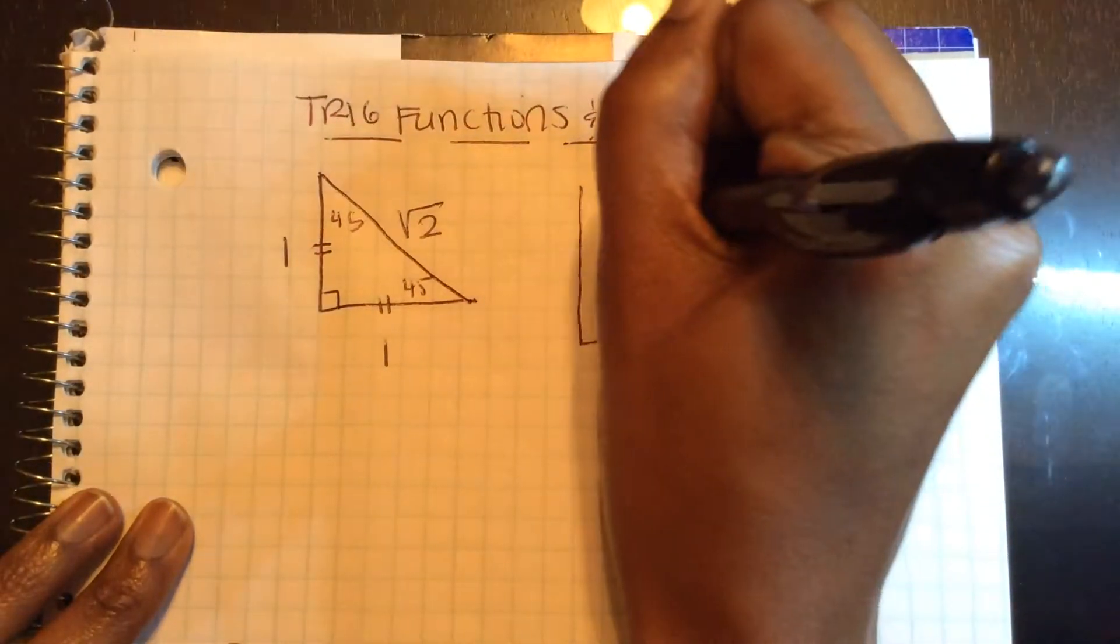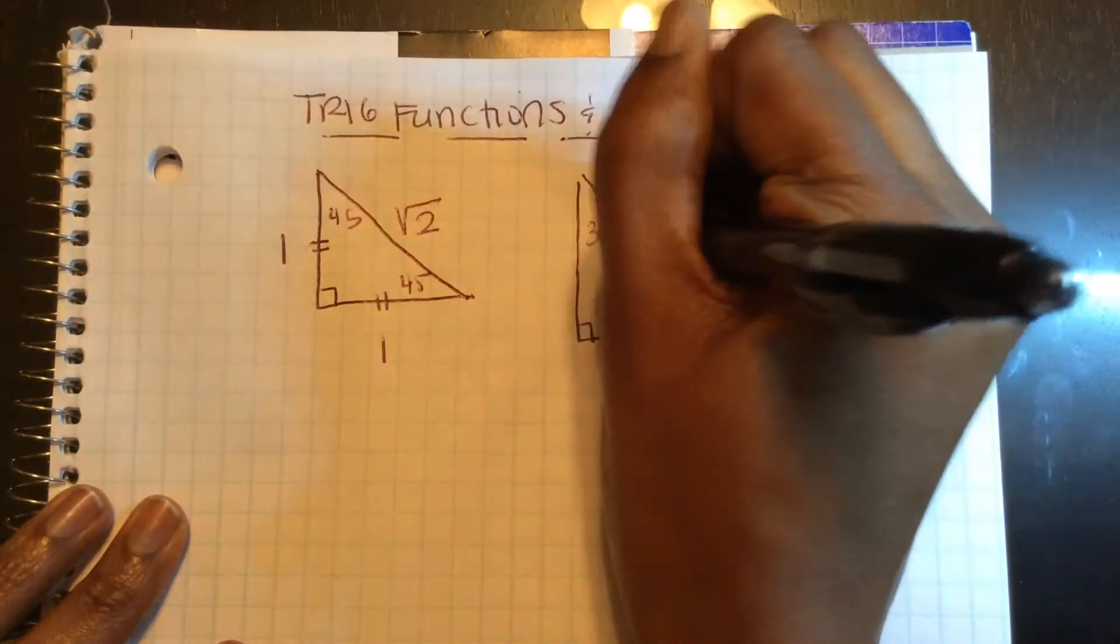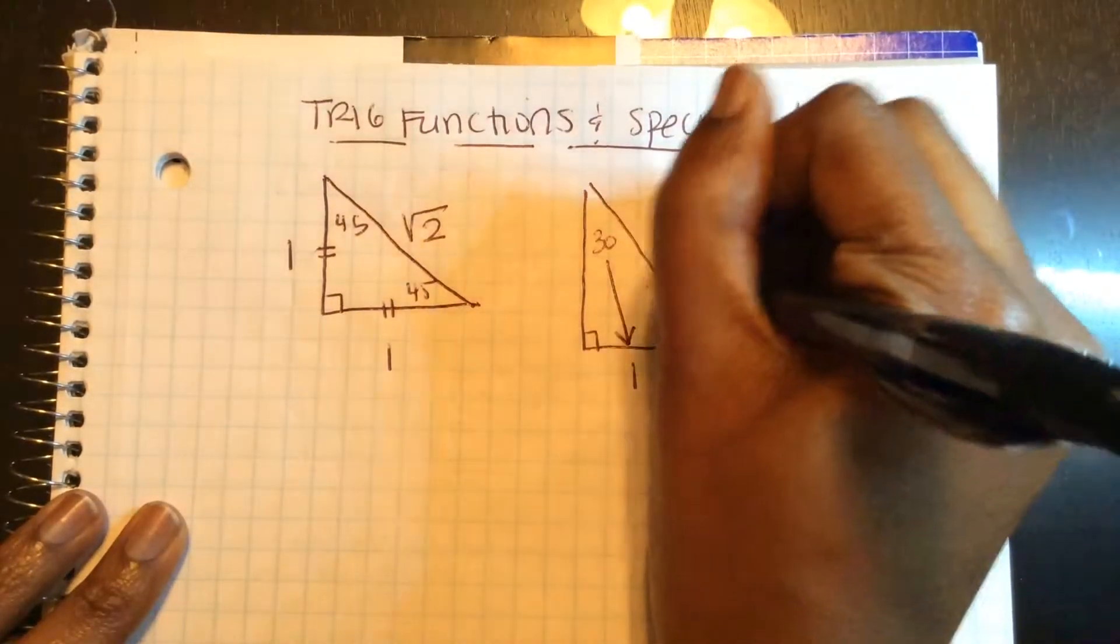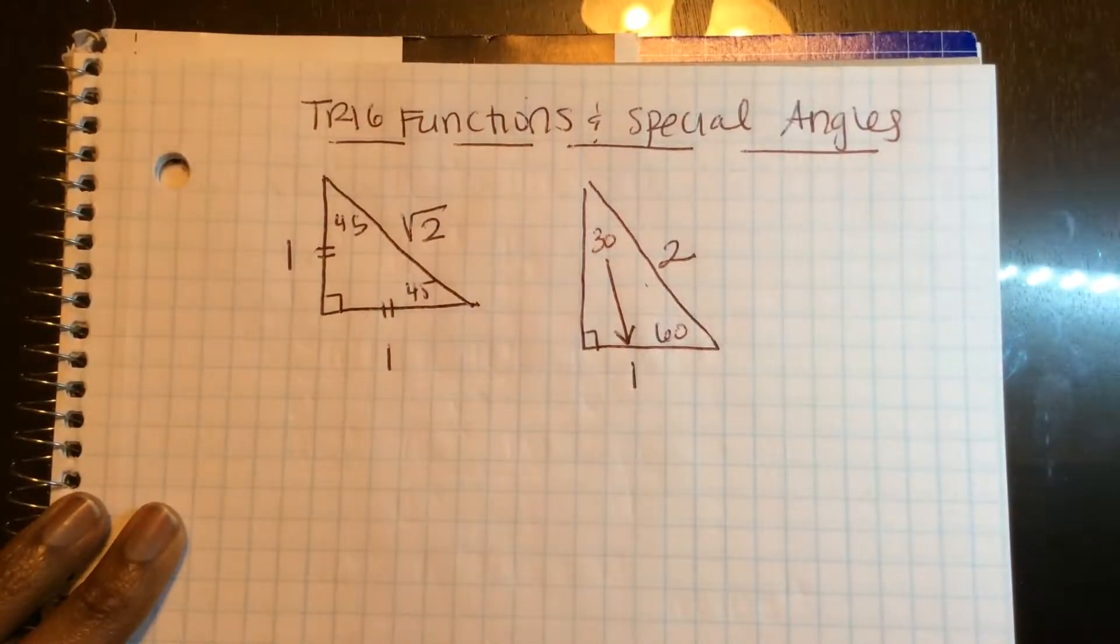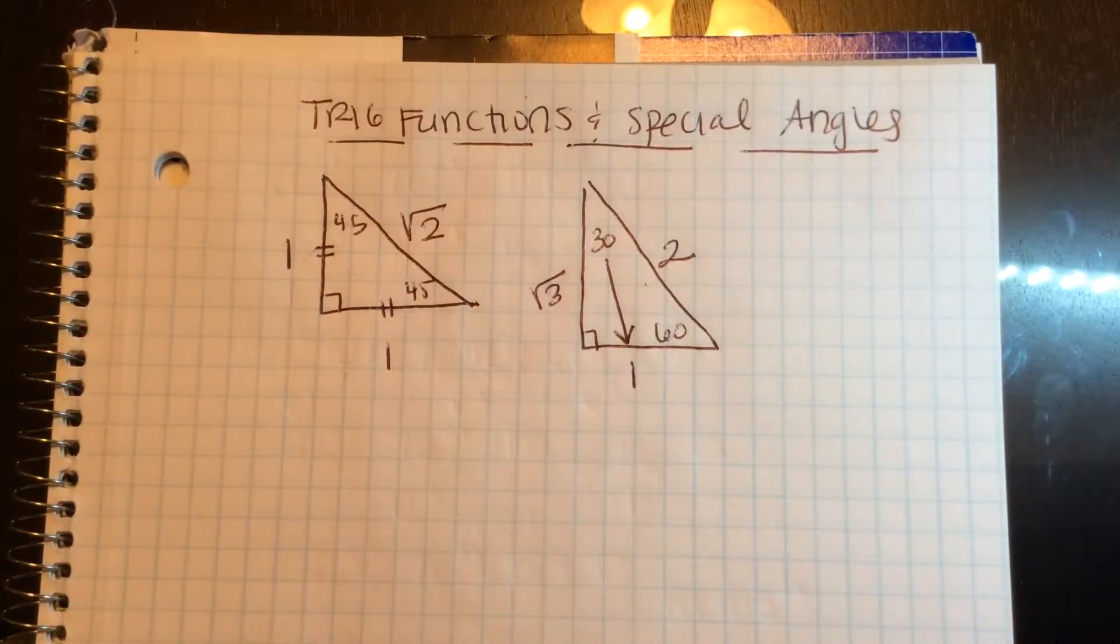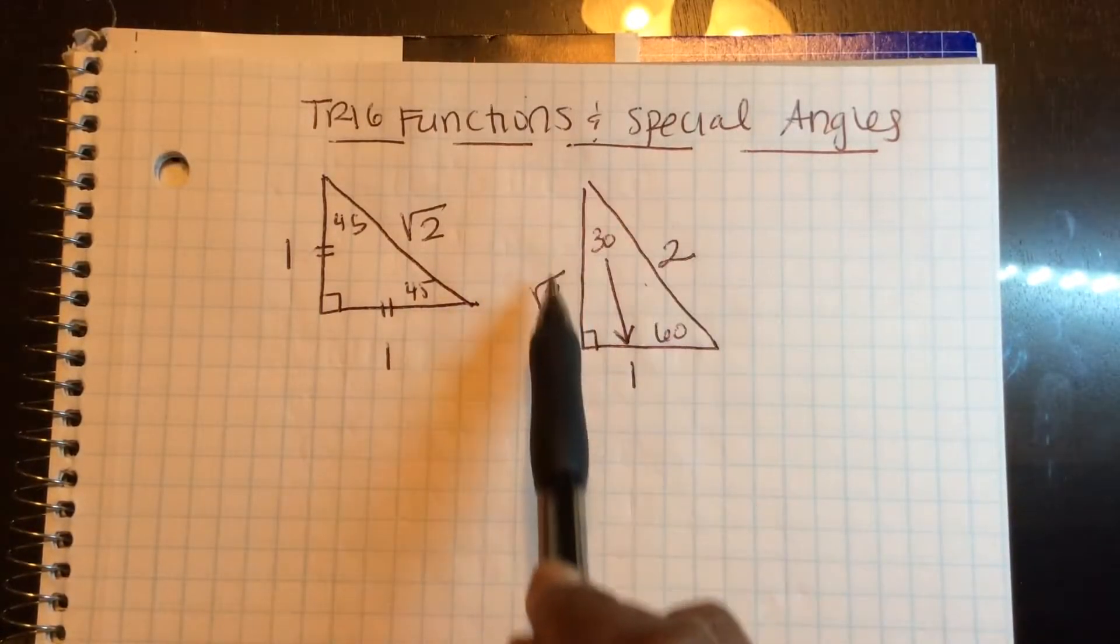The other special angles are 30 and 60. In a 30-60-90 triangle, opposite from 30 is your smallest side, 1. The hypotenuse is double that. And if you do the Pythagorean theorem, this side is square root 3. So if you remember the visual of this triangle,